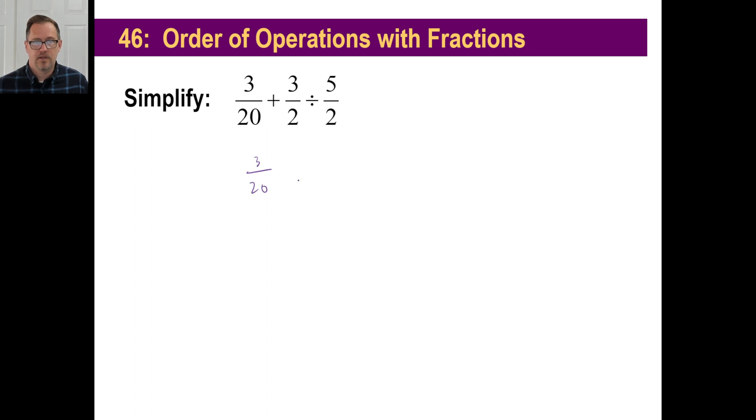So we've got three twentieths plus three halves divided by five halves. Don't add these together. You multiply and divide first. If you divide by five halves, that means you multiply by two fifths. So this is what you want to do first. That's a piece of cake. Got two gone out of there. That's going to be three times one over one times five, or three fifths.